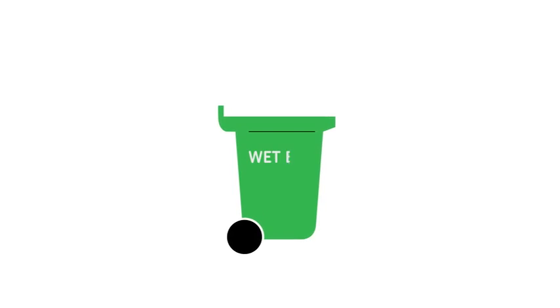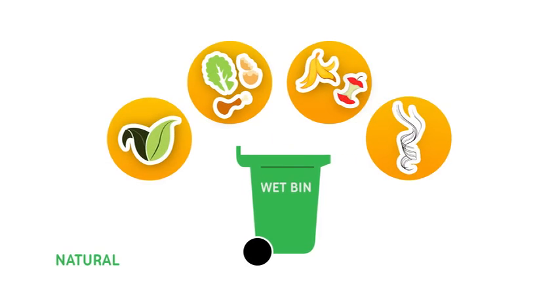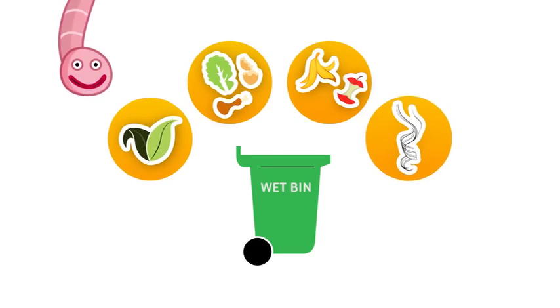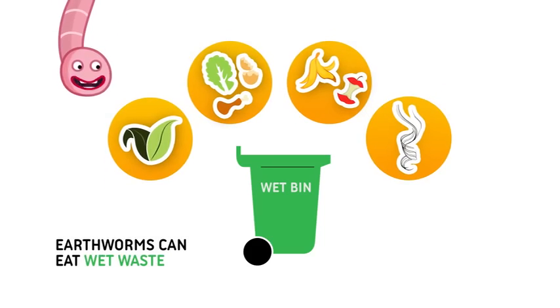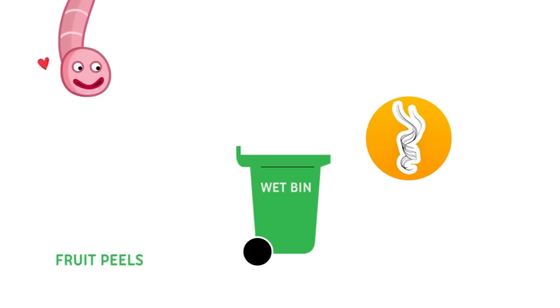You see, this is a wet bin. It's all green in color. Here, we throw all natural things. Things that come from nature. A good way to remember it is, if it's anything that can be eaten by earthworms, like leaves, leftover food, fruit peels, and hair.